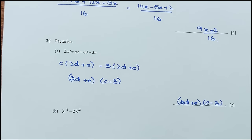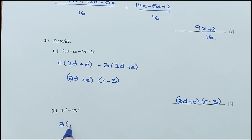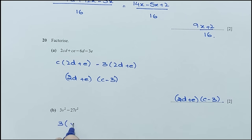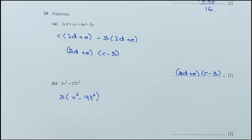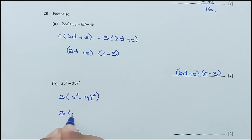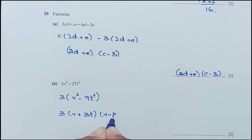For part B: simplify by first taking 3 as a common factor, giving 3(v² minus 9t²). Then using the difference of squares formula: 3(v + 3t)(v minus 3t).